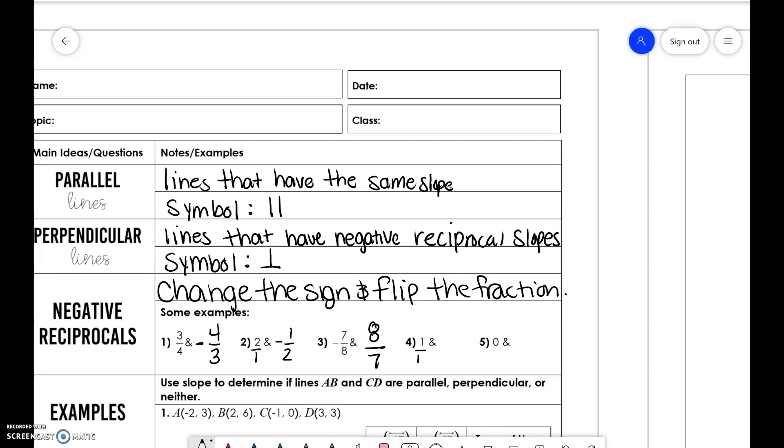These are a little tricky. 1 over 1, when you flip that fraction, you just get negative 1. And if you have a 0 slope, that's horizontal. If we do a perpendicular, that means we need a slope that is up and down, so that is undefined.